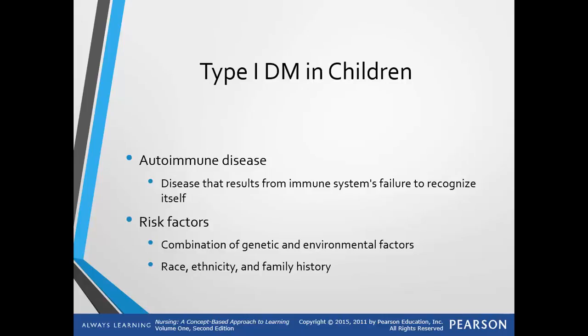Type 1 diabetes in children is an autoimmune disorder — a disease that results from the immune system's failure to recognize itself. It results in normal host tissues being targeted by the immune defenses. Risk factors include a combination of genetic and environmental factors. The one proven environmental trigger of type 1 diabetes is congenital rubella. Other risk factors are race, ethnicity, and family history.